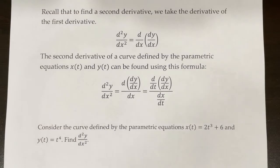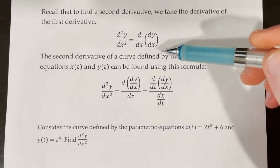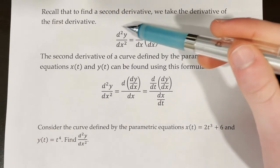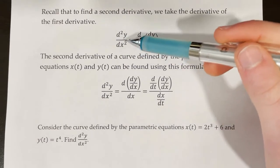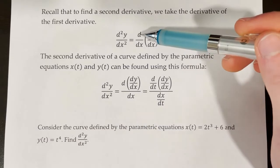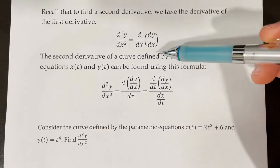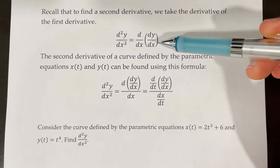Recall from previous lessons that to find a second derivative, we have to take the derivative of the first derivative. This is what this looks like mathematically. The second derivative of y with respect to x is equal to d dx of that first derivative, dy dx.